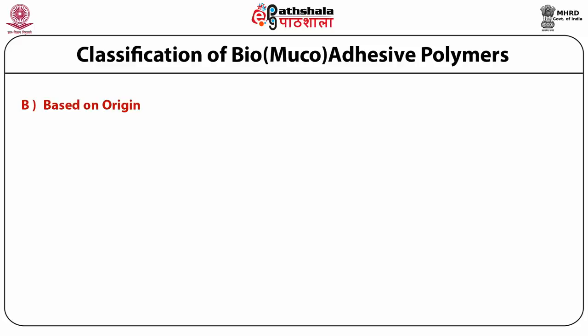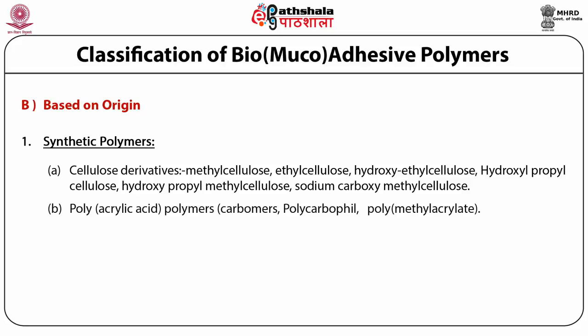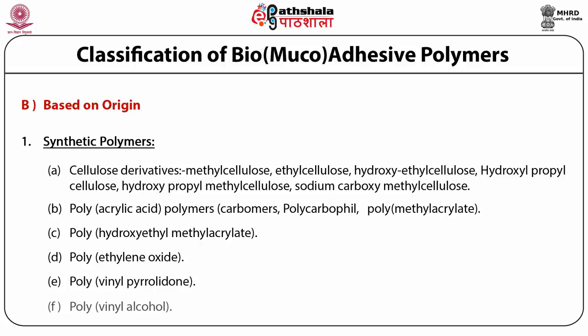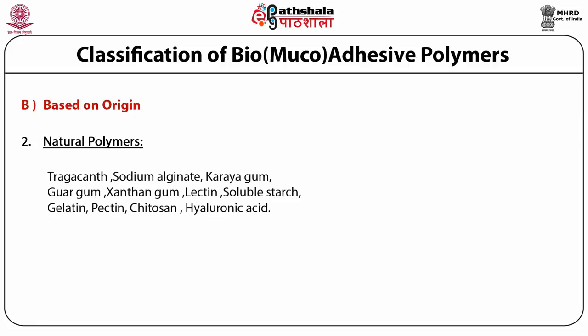Another classification is based on origin: synthetic or natural polymers. Under synthetic polymers, we have cellulose derivatives such as methylcellulose, ethylcellulose, hydroxyethylcellulose, and sodium carboxymethylcellulose. We also have polyacrylic acid polymers (also called carbomers), polycarbophil, polymethacrylate, polyethylene oxide, polyvinyl pyrrolidone, and polyvinyl alcohol. Under natural polymers, typical examples include tragacanth, sodium alginate, carrageenan, gelatin, chitosan, hyaluronic acid, and others.